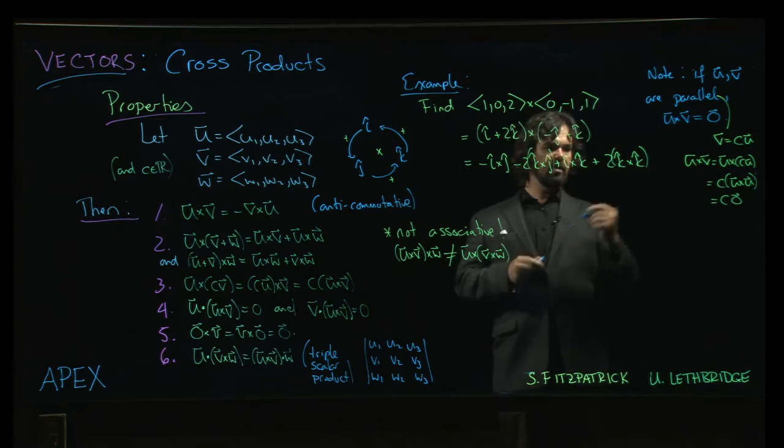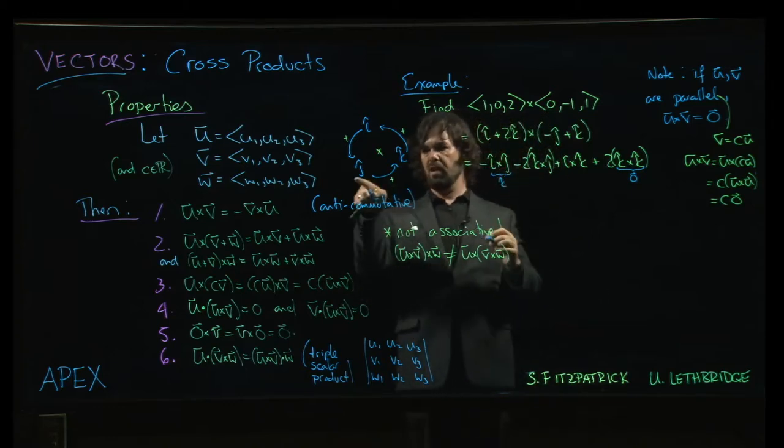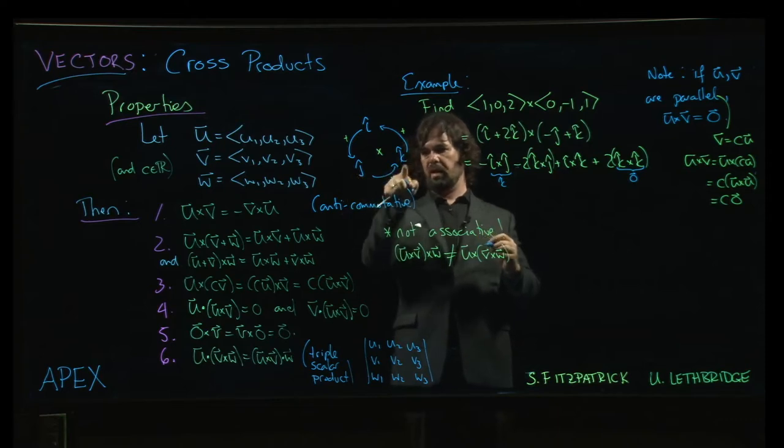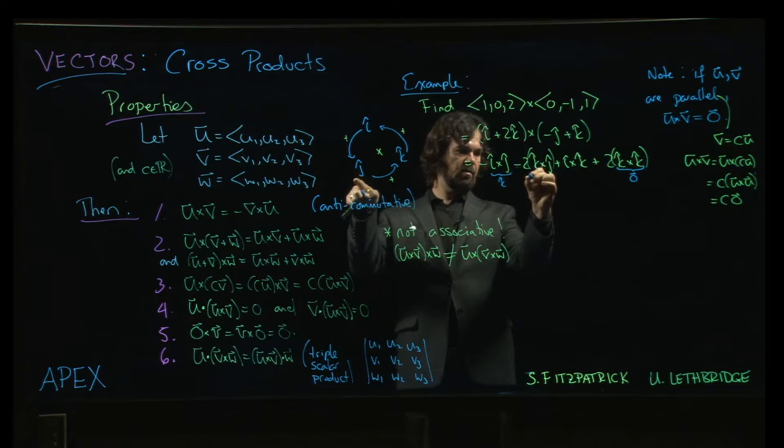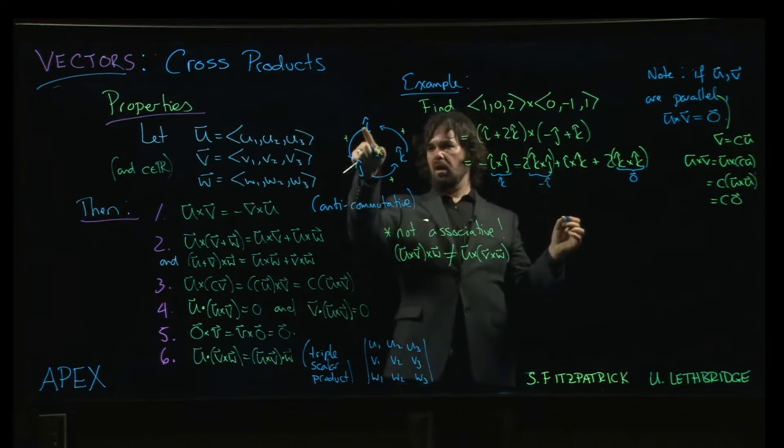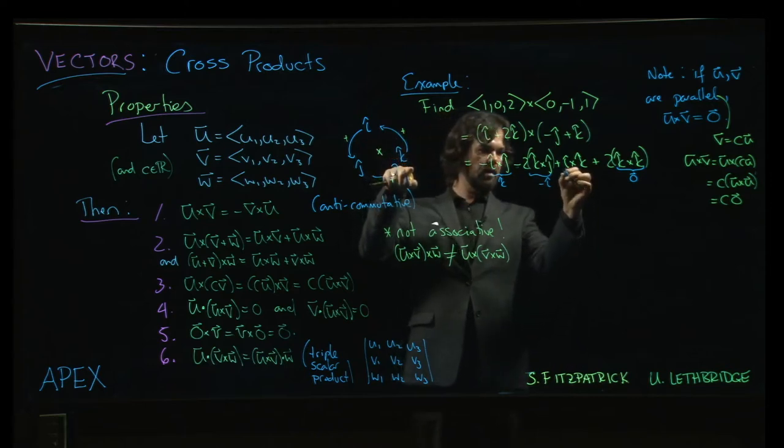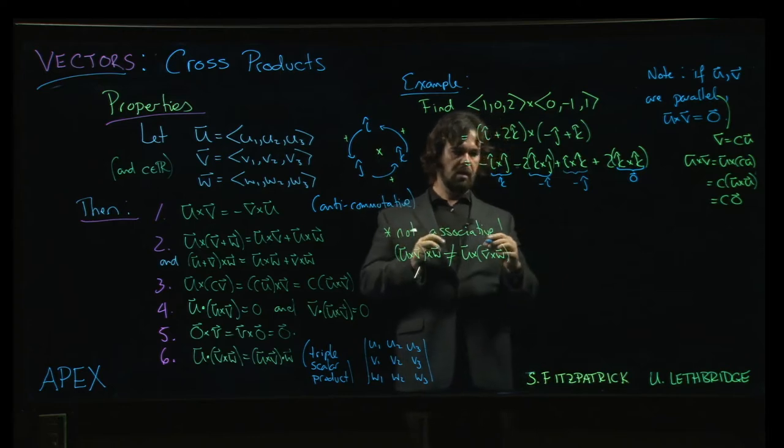So that means that in this calculation here, k cross with k will be zero. I cross j is k. k cross j, oh, you've got to go back the wrong way. k cross j goes the wrong way around, so you get a minus sign. So this is minus i. And i cross k, again, is going backwards. So i cross k would be minus j.